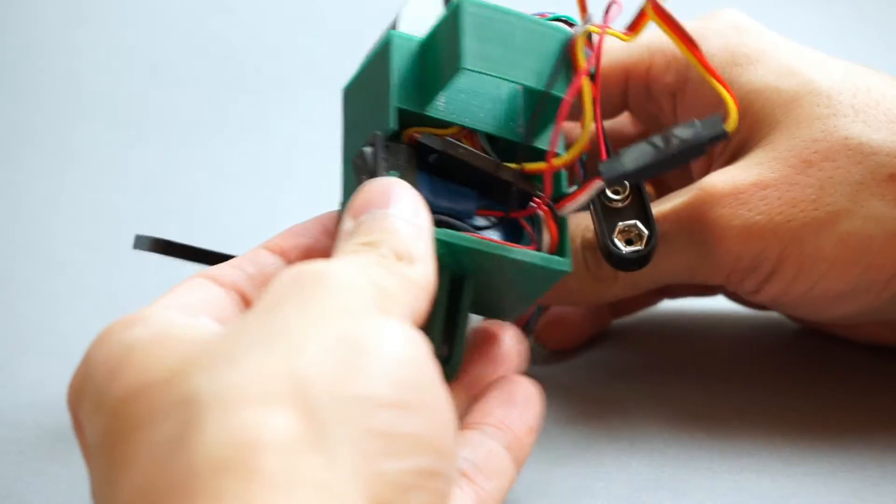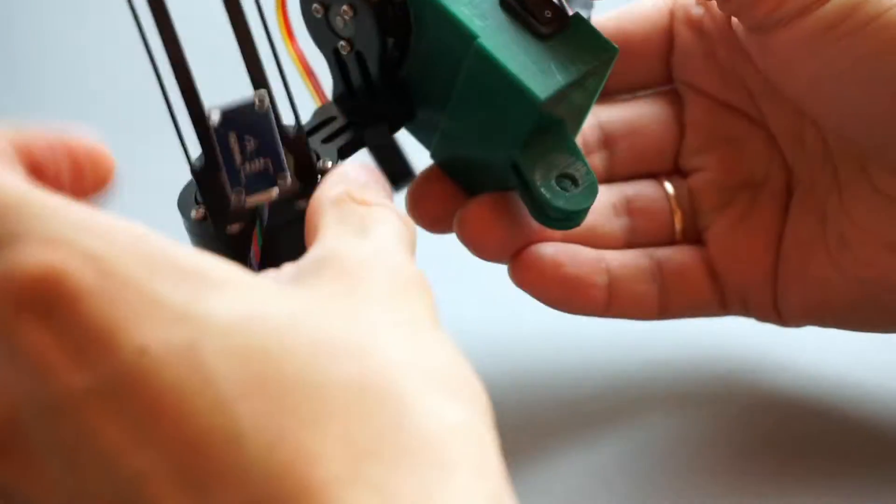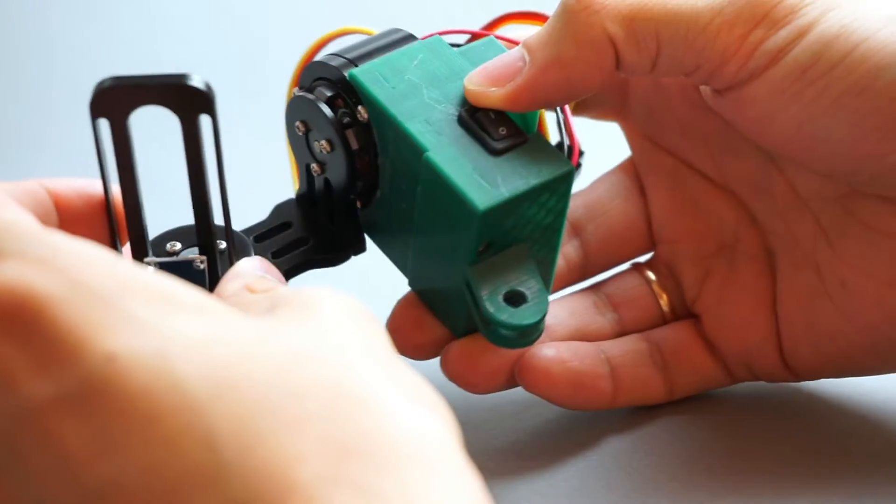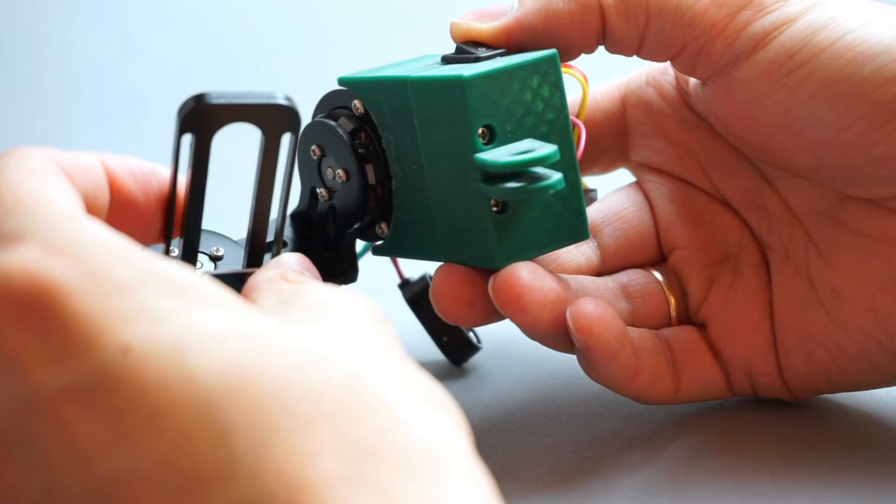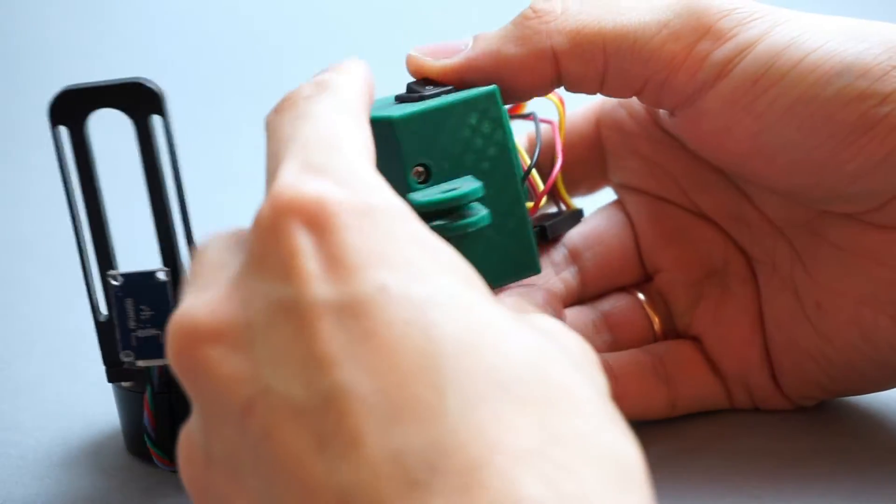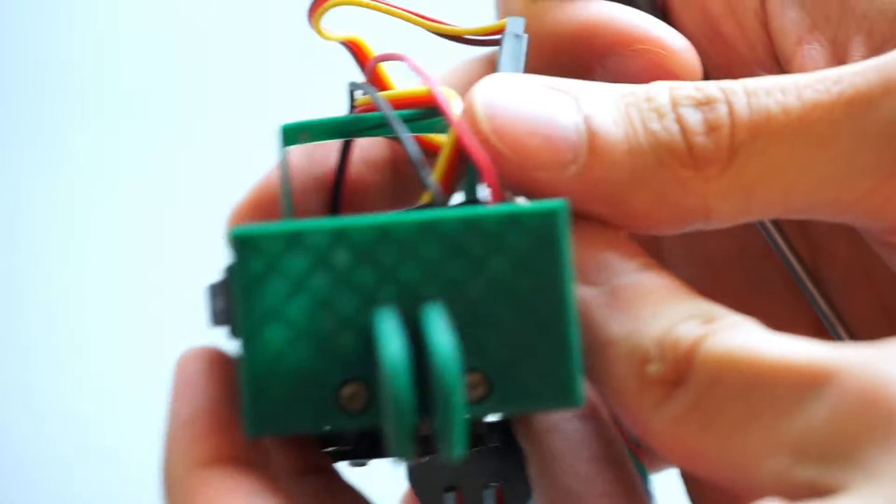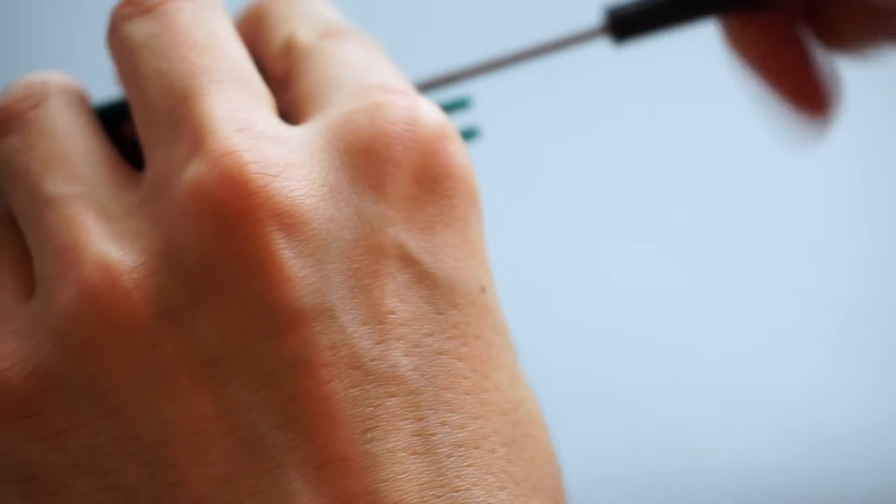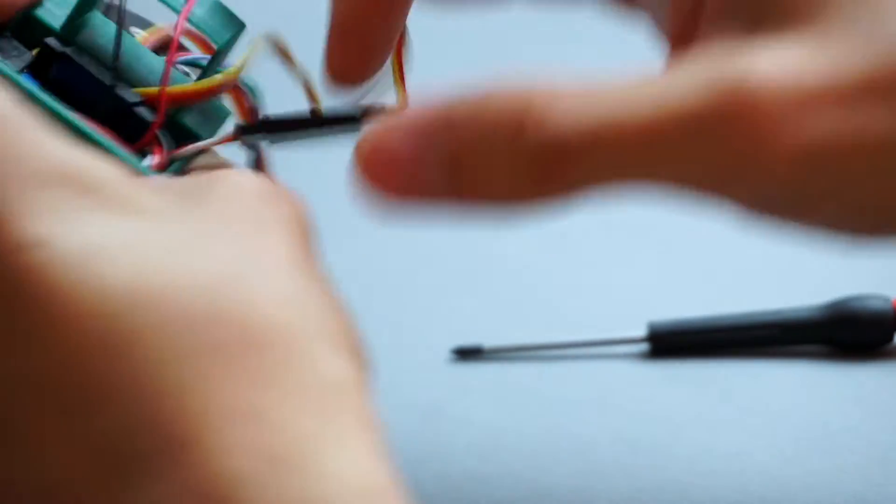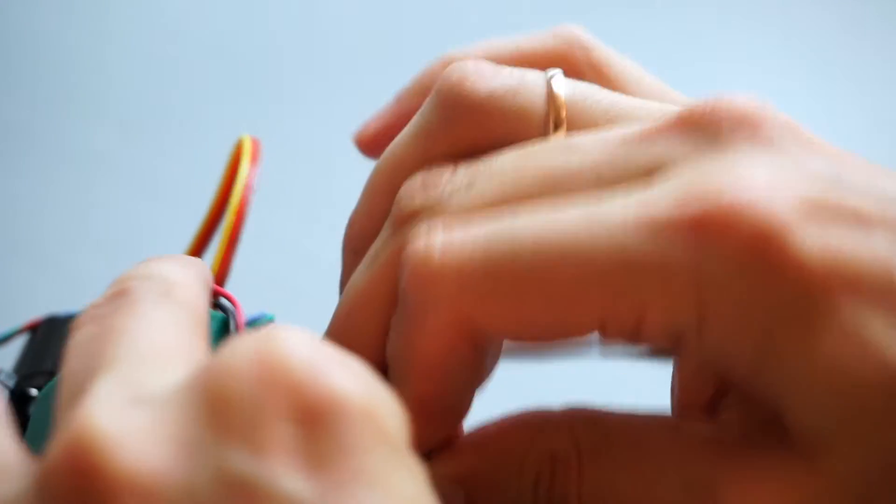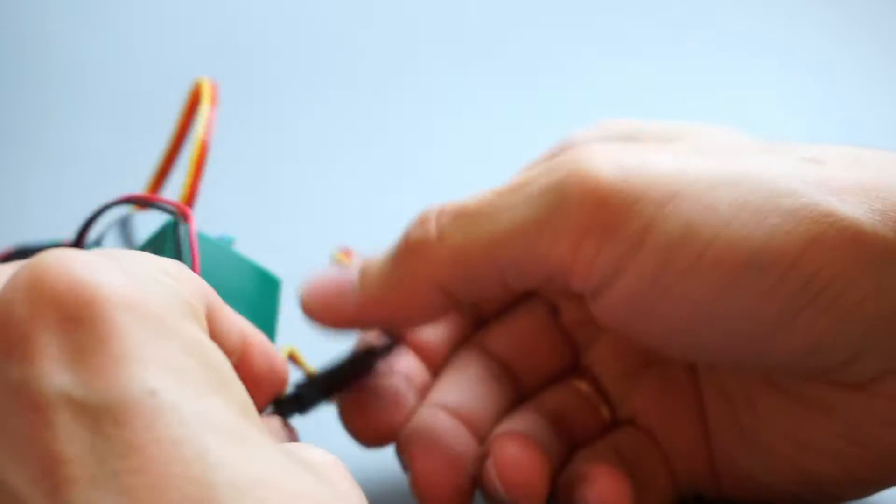So as you can see, I removed the GoPro and unmounted the mount from my selfie stick. First of all, as you can see here, I reused these two screws. The tricky part here is not to break all this wiring.